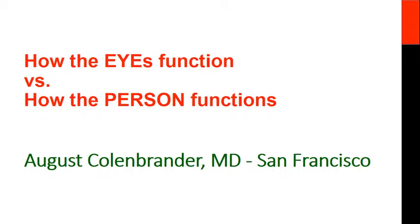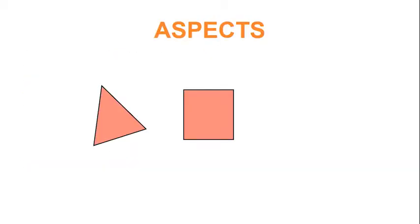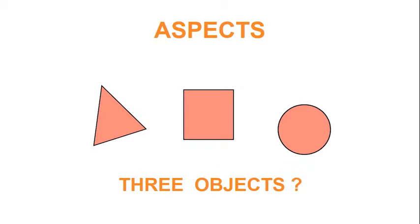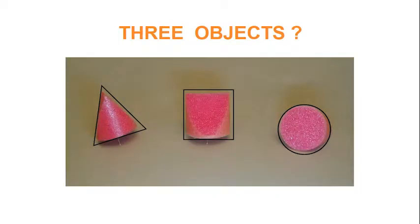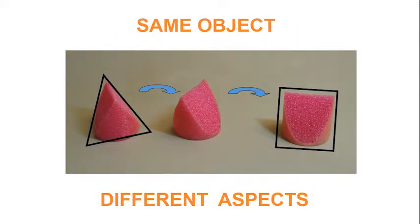What is meant by speaking of aspects? When I show you this picture, do you see three objects here? Or could it be that you are just looking at three aspects of an unfamiliar object? Turning the object around to look at it from different points of view, we discover that what seemed like different objects may just be different aspects of the same object.